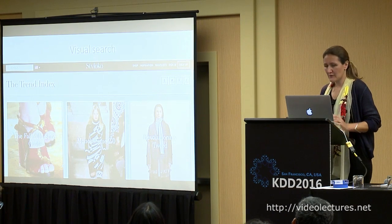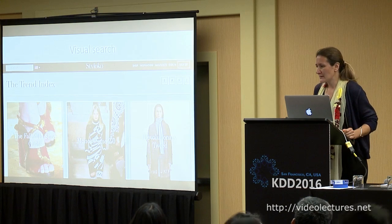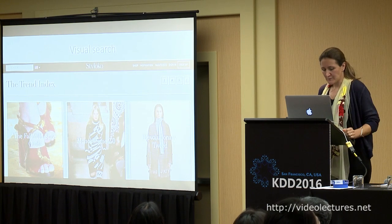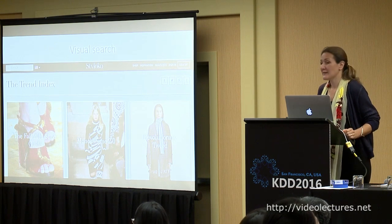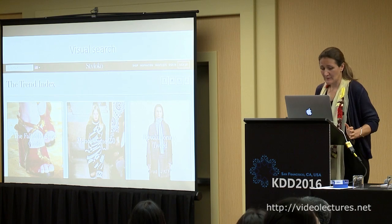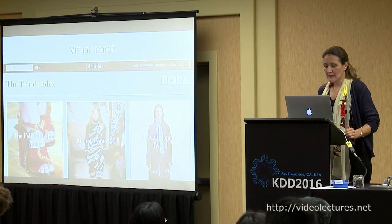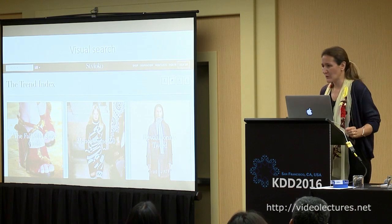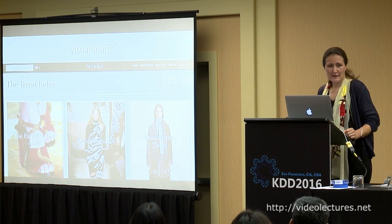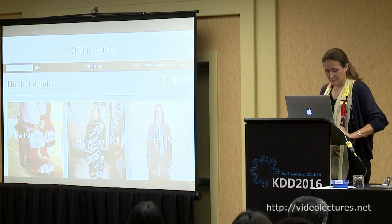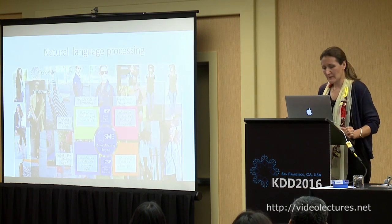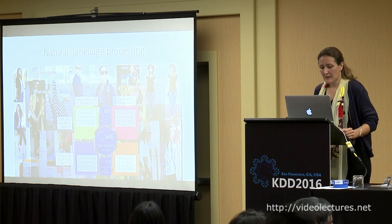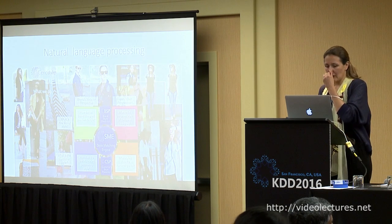Another very important problem in big fashion data is visual search. It's difficult to describe an image, and many garments can be described in a variety of ways. Being able to search with just an image would be very helpful. I think this question is still open — a lot of startups are struggling to make it real, and it's one of the very big challenges.